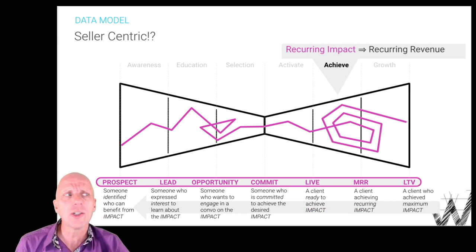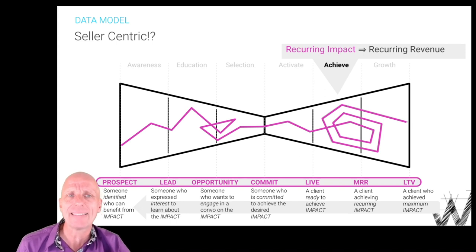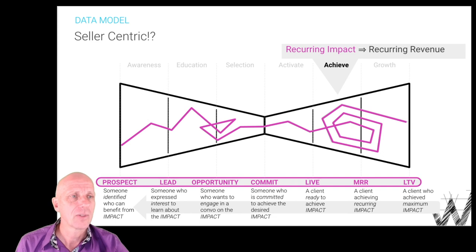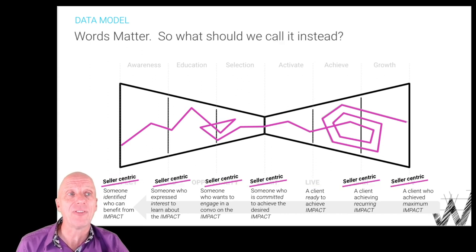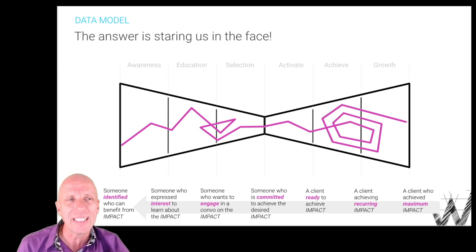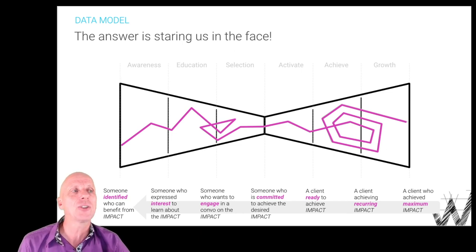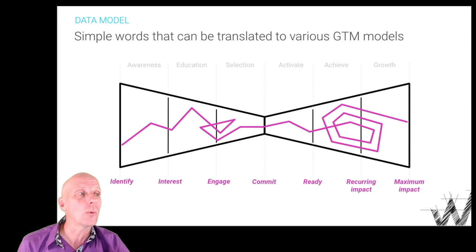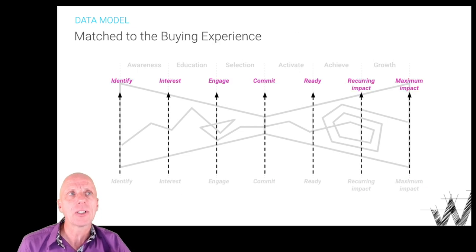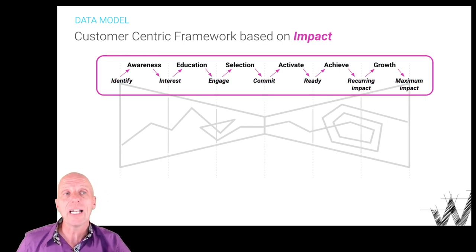Calling your customers 'prospect, lead, opportunity' is still a bit seller-centric. So we're going to change that. The answer is staring us literally in the face. If we remove all those seller-centric words, we see: someone who is identified, somebody who expressed interest, somebody who is engaged, somebody who is committed, a client ready to achieve impact, and so on. We identify clients whose business we can impact. We create awareness about the impact we provide. They become interested.